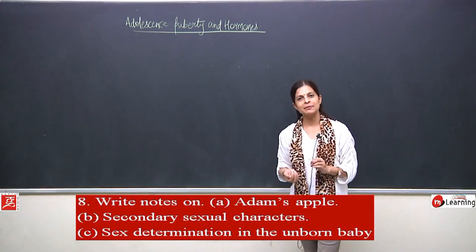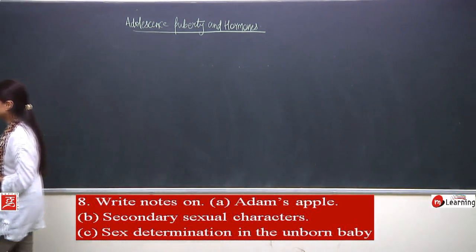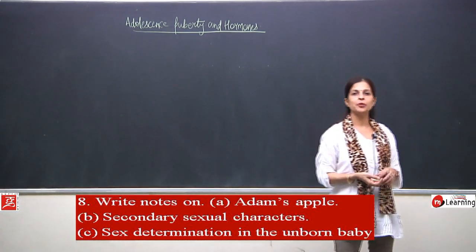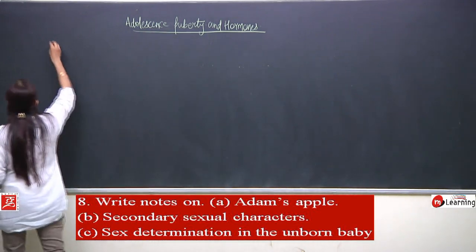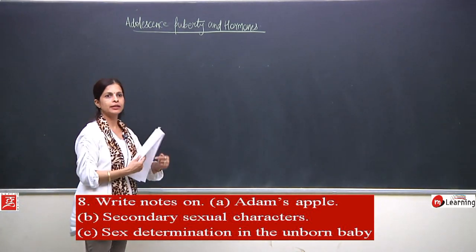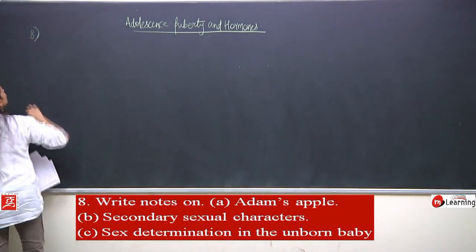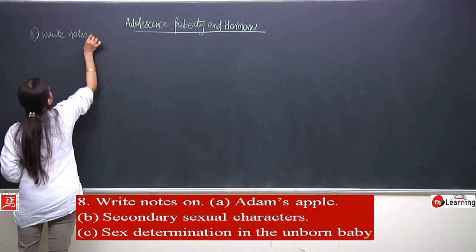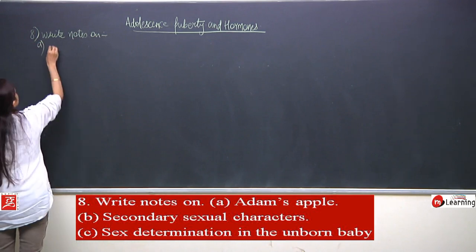So we are talking about Adam's apple. It is a protruding part in the throat and can be seen from outside. Now we will write about Adam's apple. We are solving question number 8a, which is about Adam's apple.